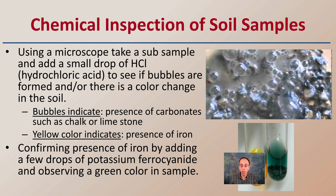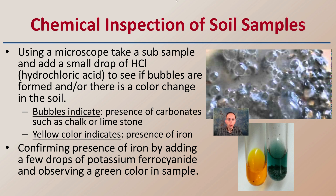We can also look at the chemical composition of soil samples — going one step further than just visible means. Using a microscope, you take a subsample and add a small drop of hydrochloric acid to see if bubbles are formed once added to the soil. You can also observe if there's a color change. Bubbles indicate the presence of carbonates such as chalk or limestone. A yellow color indicates the presence of iron. To confirm iron, add a few drops of potassium ferrous cyanide and observe for a green color — this helps classify the soil even from a very small sample.